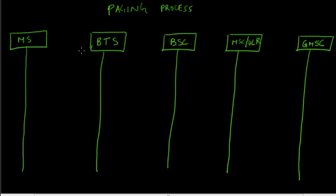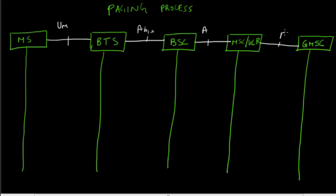Let's draw the interfaces between each component. Between MS and BTS it's the Um interface. BTS and BSC use the ABIS interface. BSC and MSC use the A interface. And the E interface connects the gateway MSC. The incoming call comes from the gateway MSC to the correct MSC.